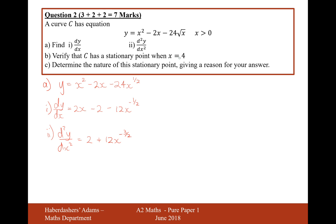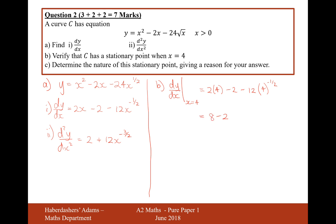Part B: verify that C has a stationary point when x equals 4. In order to do that, I need to show that dy/dx equals 0 when x equals 4. Evaluating at x equals 4: dy/dx equals 2 times 4 minus 2 minus 12 times 4 to the power of minus a half. That's 8 minus 2, and 4 to the power of minus a half is a half, so it's 12 over 2, giving 8 minus 2 minus 6, which is 0. As dy/dx equals 0, there is a stationary point.